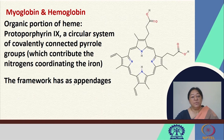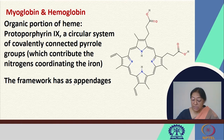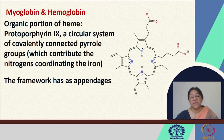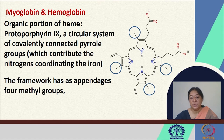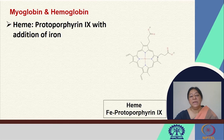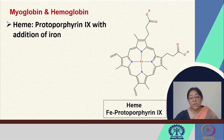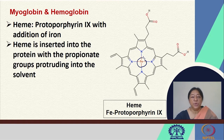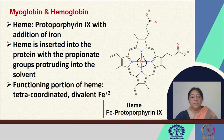The organic portion of the heme, protoporphyrin 9, is a circular system with covalently connected pyrrole groups that contribute the nitrogens coordinating the iron ion. The framework has specific appendages: four methyl groups, two vinyl groups, and two propionate groups. Heme is iron bound to protoporphyrin 9, coordinated by the nitrogen atoms. Heme is inserted into the protein with the propionate groups protruding into the solvent, and the functioning portion of the heme is the tetra-coordinated divalent Fe2+.